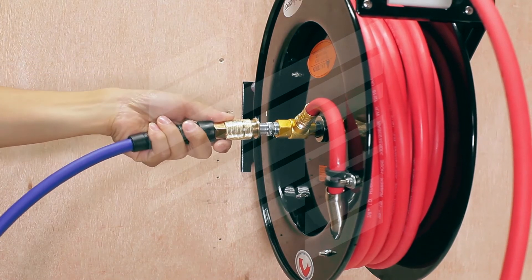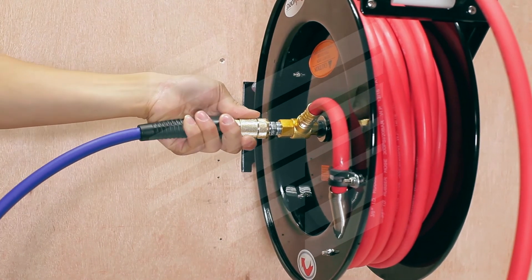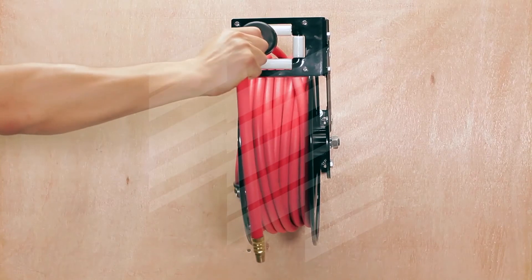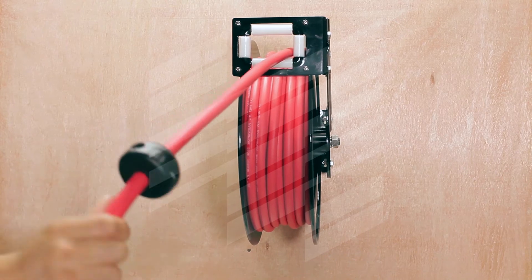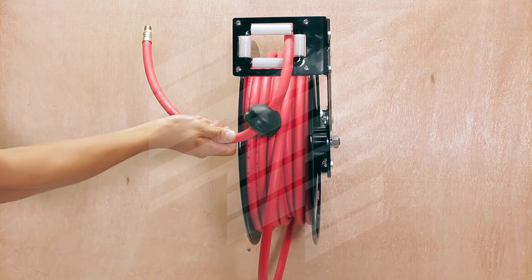The end of the incoming hose can be connected to the desired supply source. To latch the reel, pull out the hose and allow it to retract after hearing the first, second, or third click.